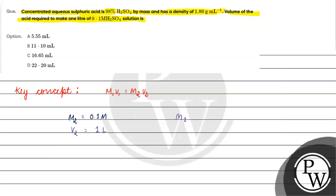We need to find M1 and V1 using this formula. So what is M1? Molarity is basically equal to number of moles of H2SO4 divided by volume of solution.